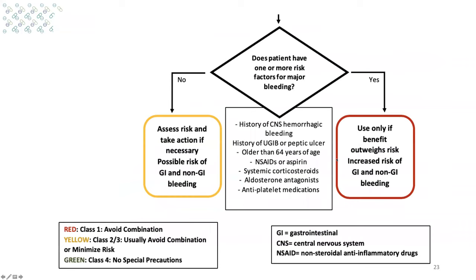If the person is taking an SSRI or SNRI, then the question is: does the patient have one or more risk factors for bleeding? If the answer is no, there's still a potential risk — that goes to the yellow box where you assess risk and decide what to do. If they do have one of those risk factors, such as history of hemorrhagic bleeding, then it would be: use only if benefit outweighs the risk of increased bleeding.